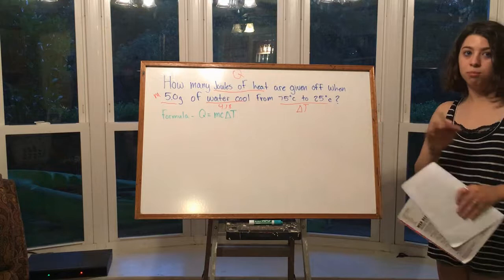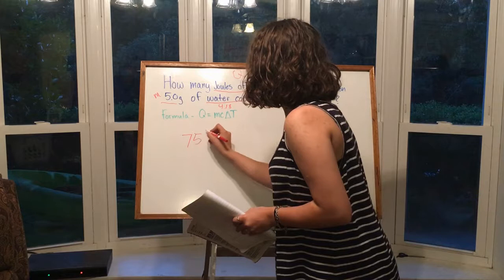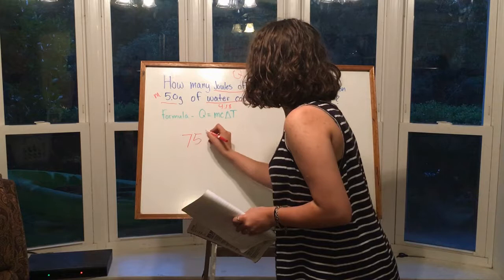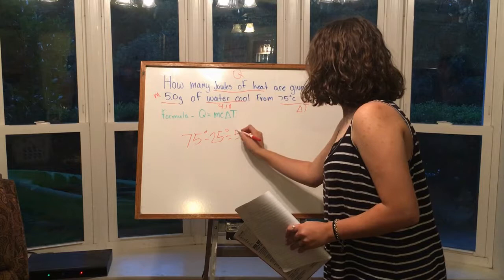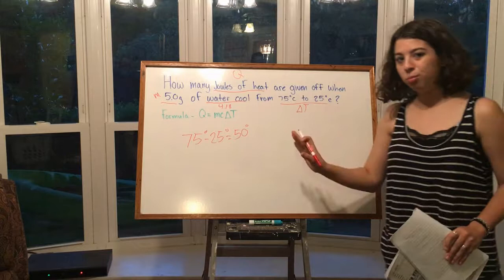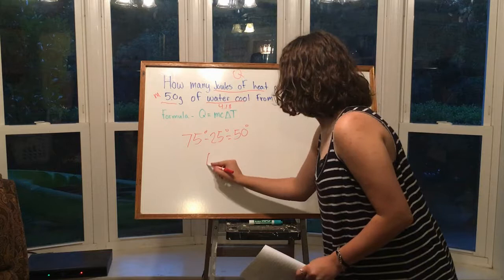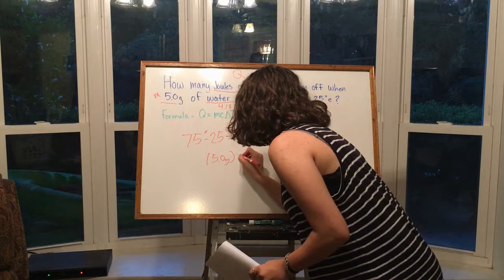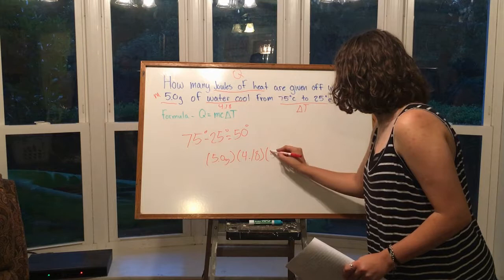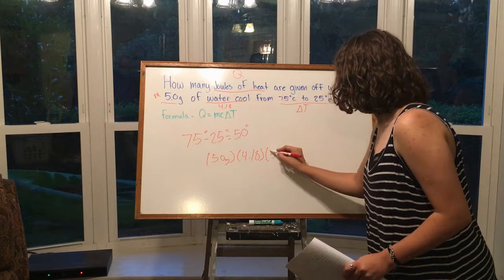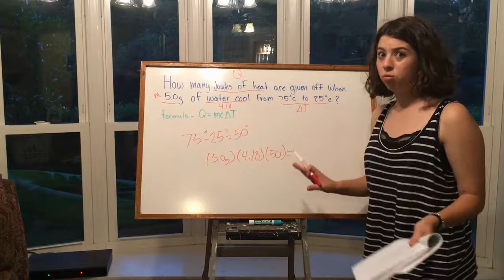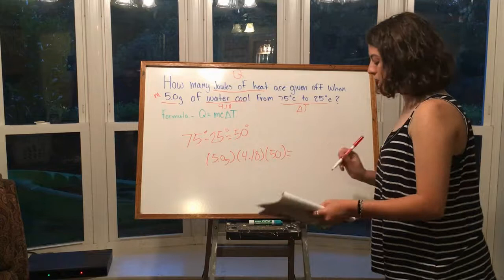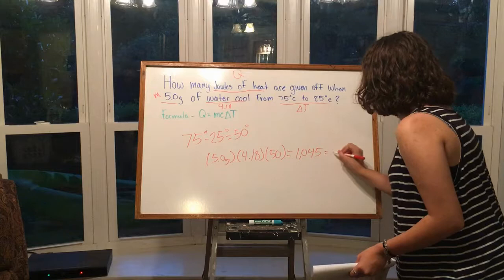First, calculate ΔT: 75 degrees minus 25 degrees equals 50 degrees. Then it becomes a simple multiplication problem — replace m with 5.0 grams, c with 4.18, and ΔT with 50. Multiplying 5 times 4.18 times 50 gives you 1,045 joules of heat.